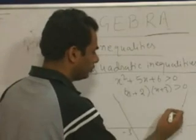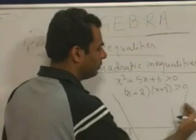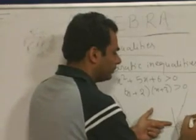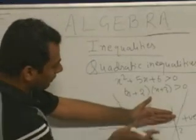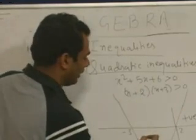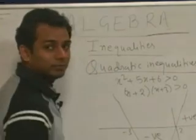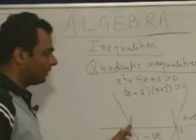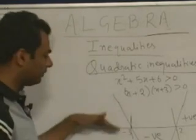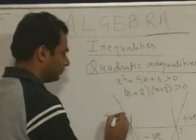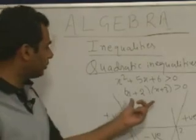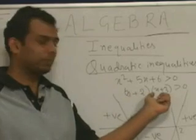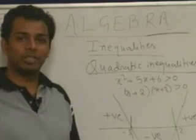After −2 the graph is going upwards, so this region is positive. But between −2 and −3 the graph is below the x-axis, so this region is negative. Before −3 again the graph is above the line, so it is positive. Here we need to find the value of x such that (x + 2)(x + 3) is positive.